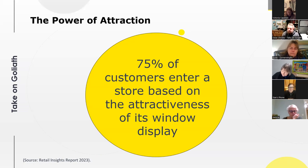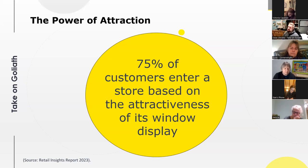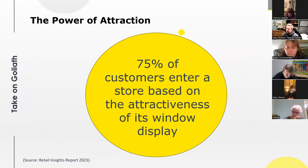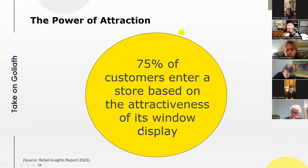This is a really important stat — when you look at different data points, this number varies very little. It's a high number of customers who enter a store based on something they see as they walk past the window. The attractiveness of your window display is that important, and it hasn't moved for about a decade. Make sure you're attracting the right customer — in reality any customer is the right customer, but what's your biggest opportunity? What's the main person you're trying to attract?